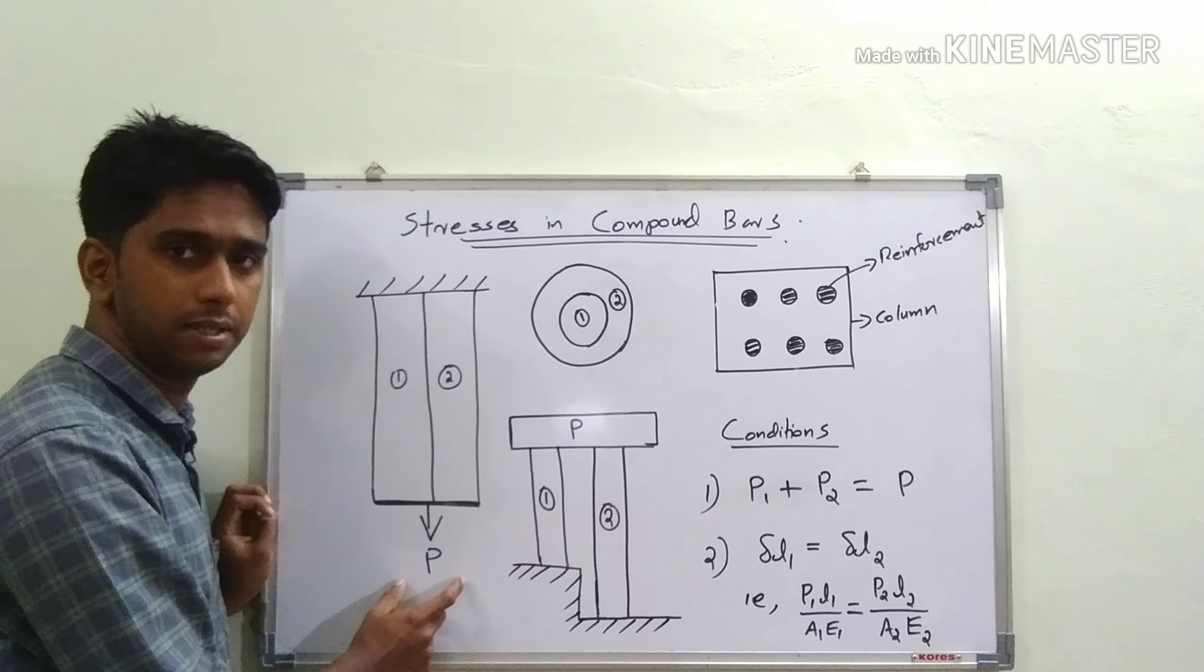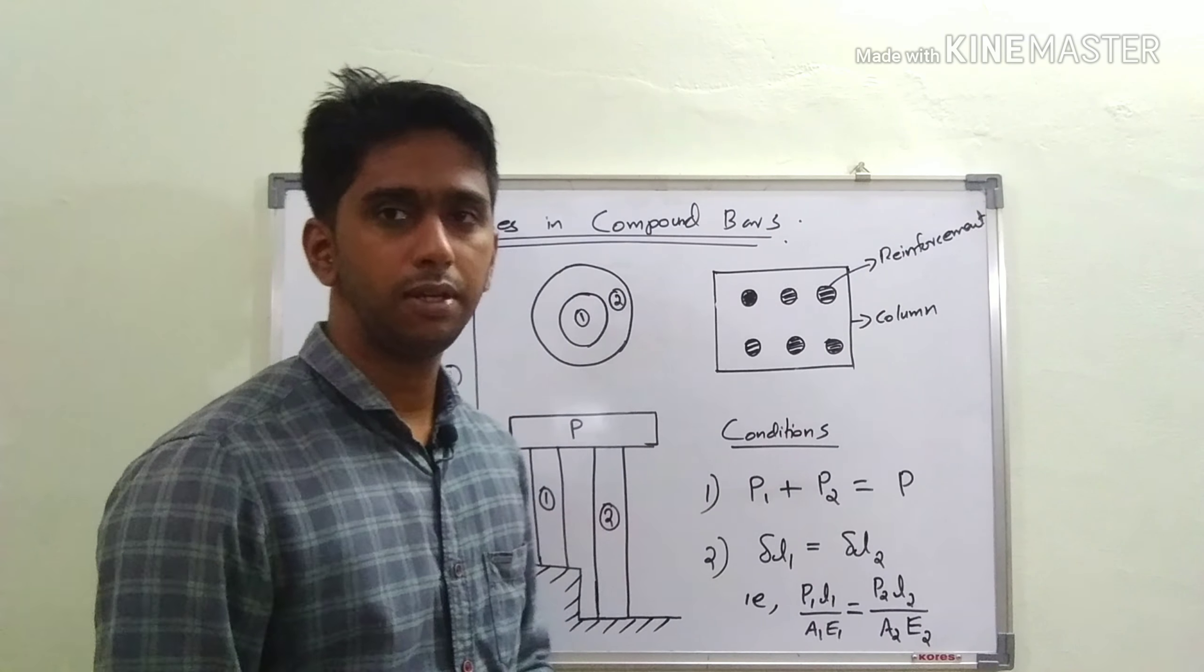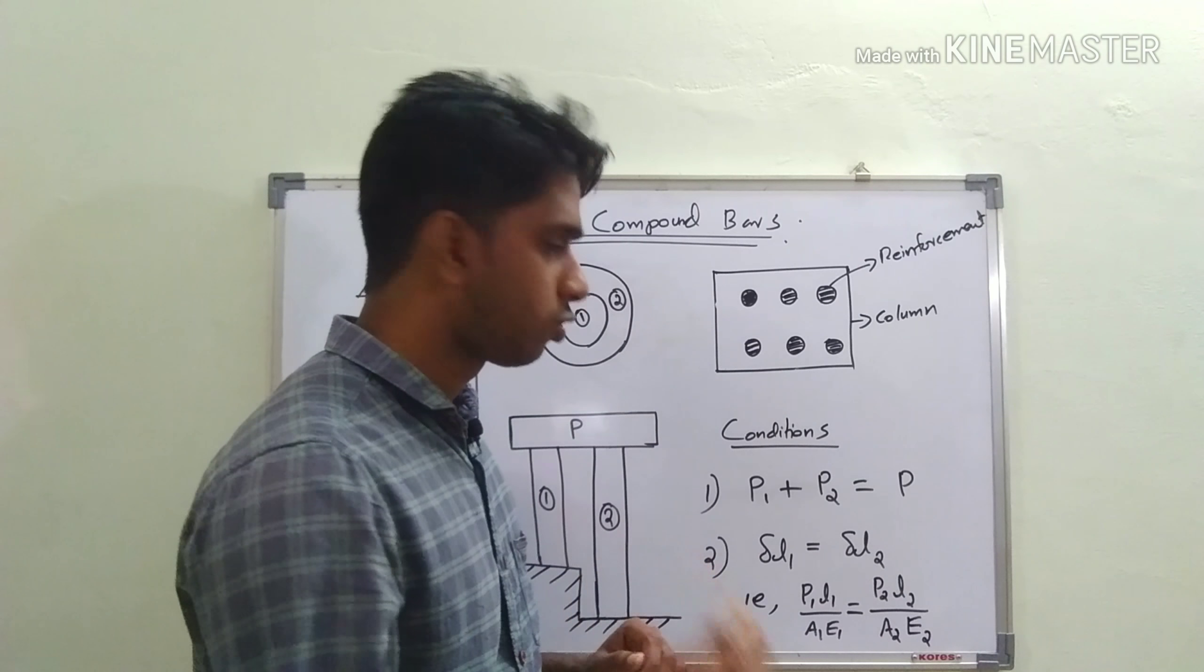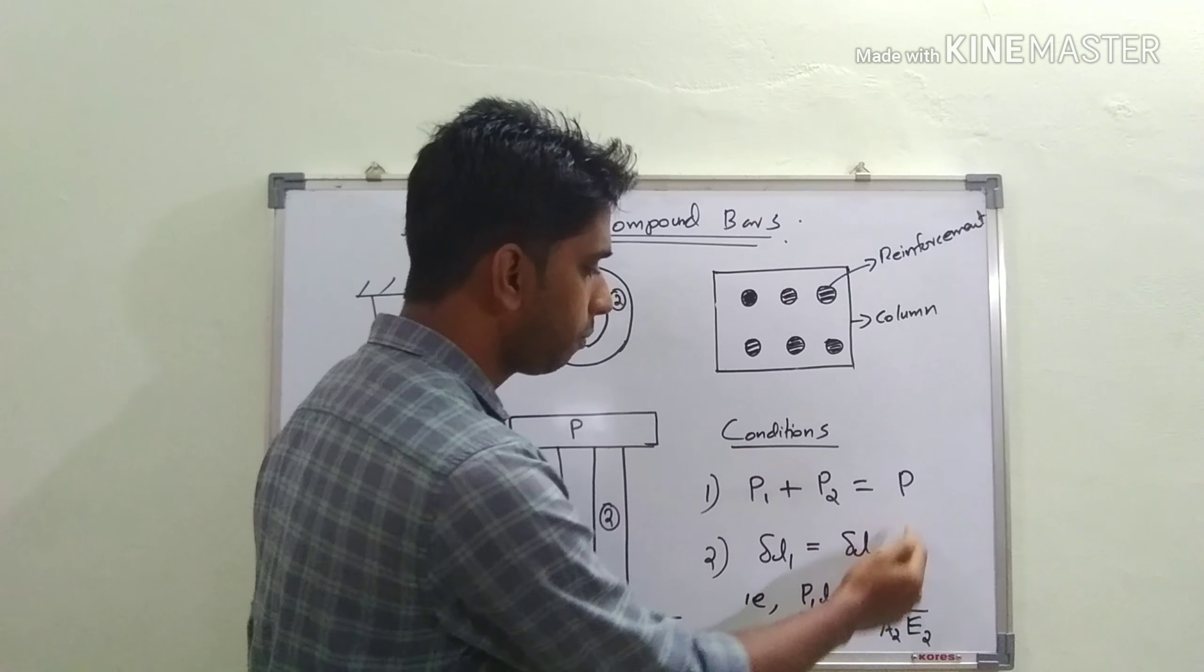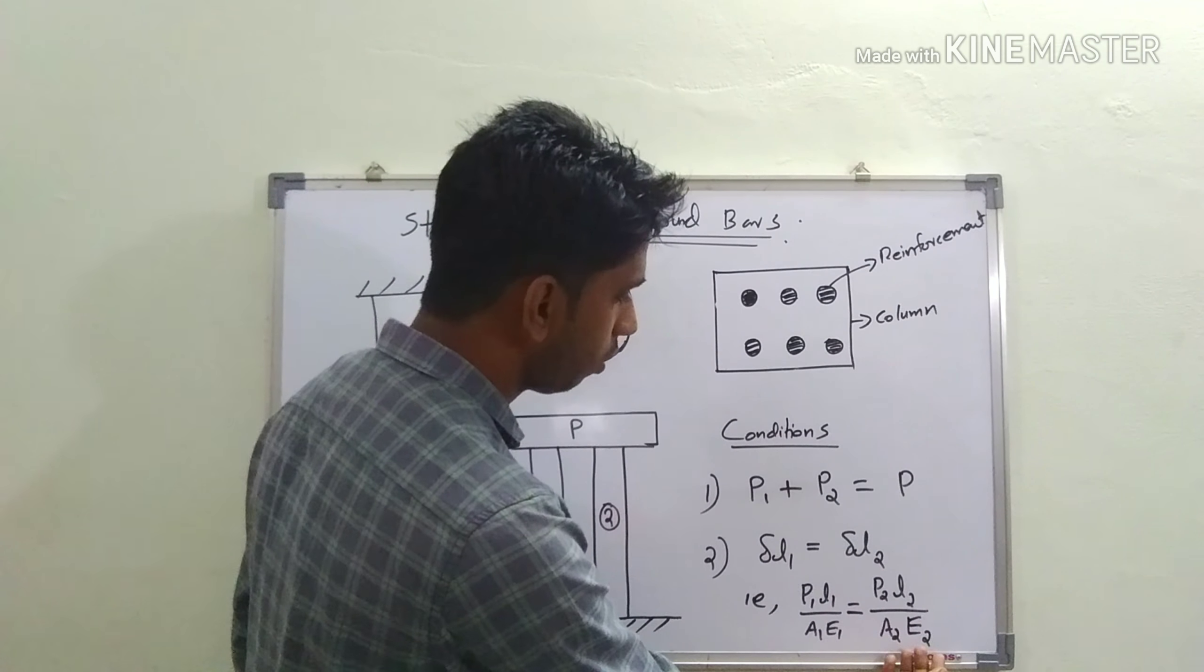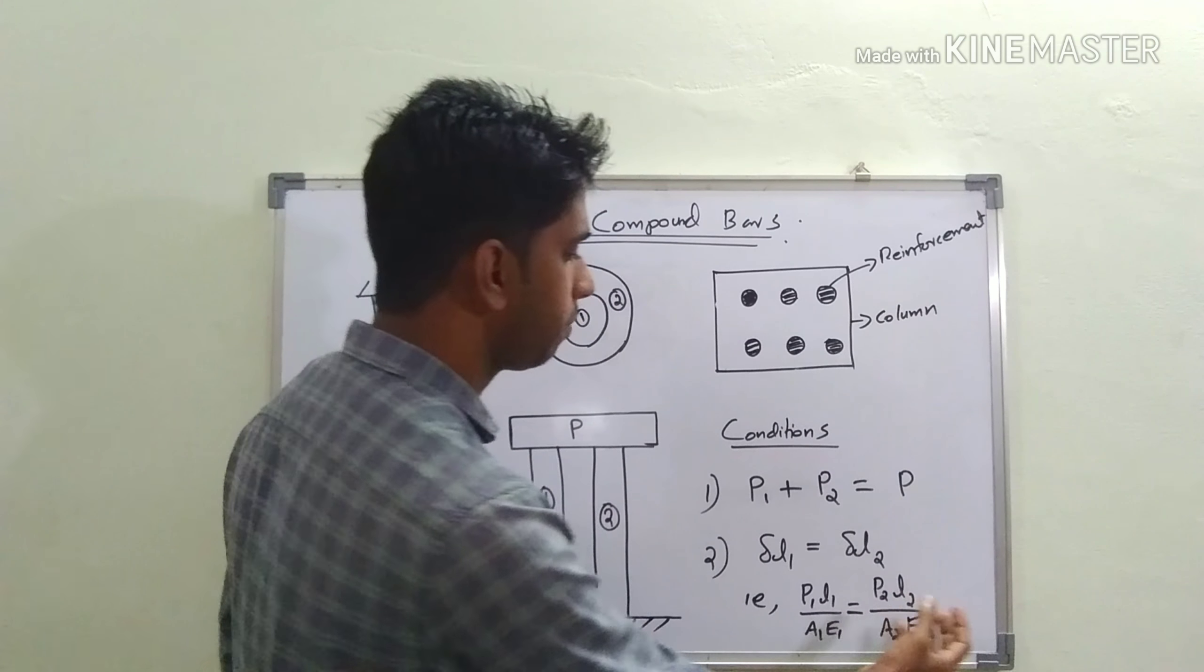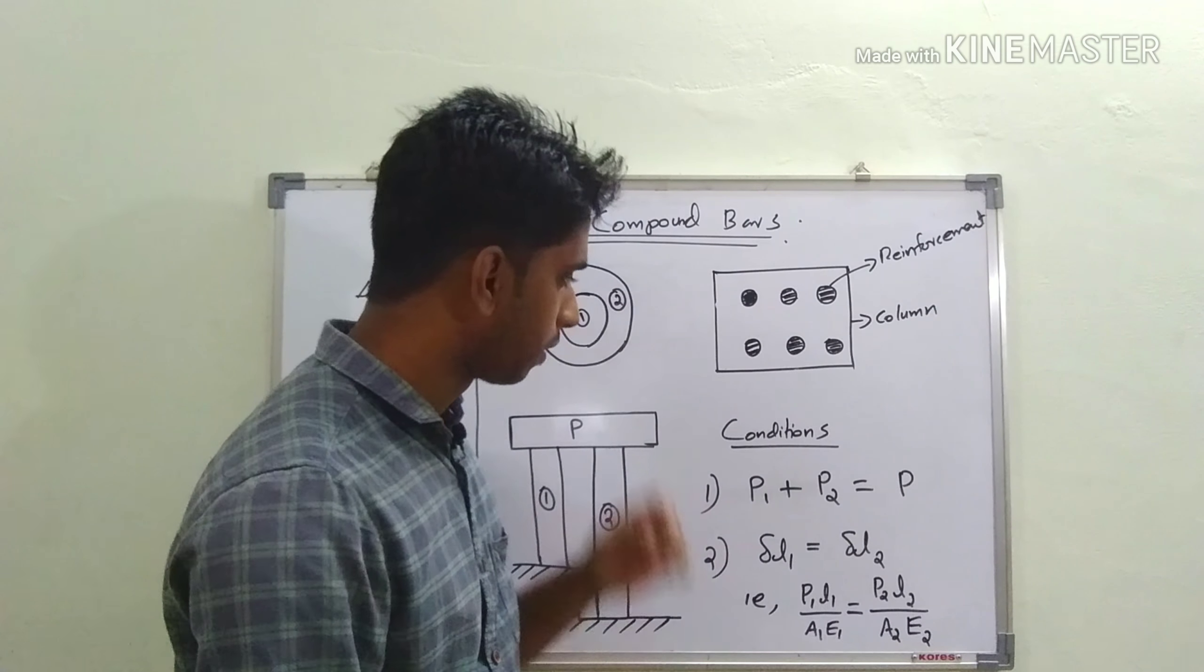Mathematically, we write ΔL₁ = ΔL₂. We can substitute: P₁L₁/(A₁E₁) = P₂L₂/(A₂E₂). If the lengths are the same, you can strike off L₁ and L₂, though in some cases lengths may be different.